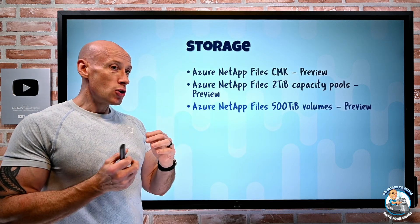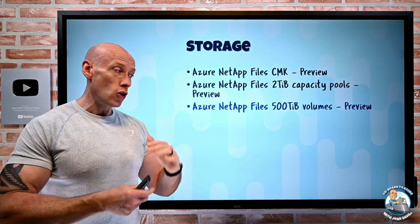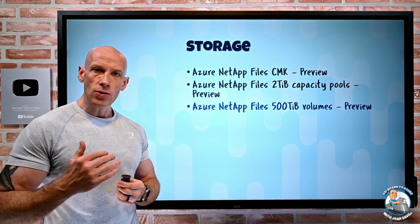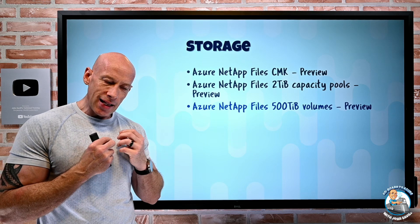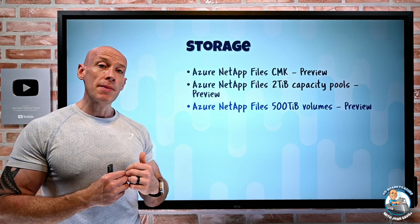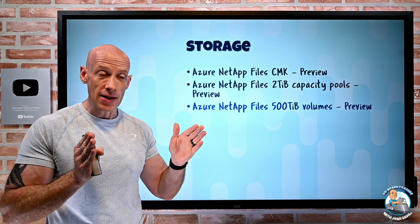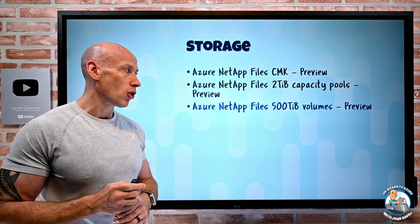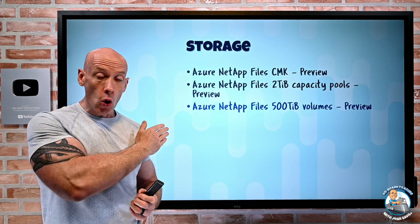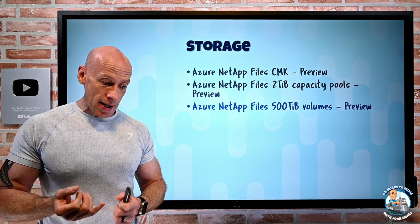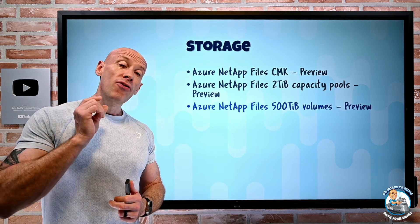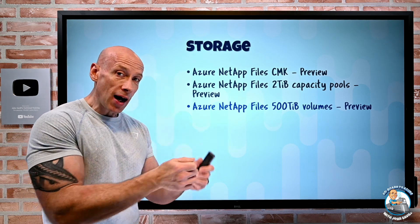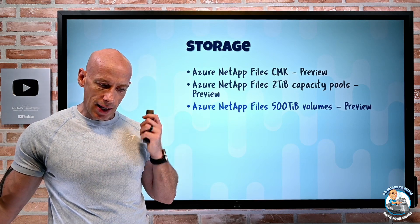At the other end of the scale, within those capacity pools I create volumes, and I can now have a large volume type. Previously, the maximum volume size was 100 terabytes. But now, if I select this new large volume type, it can be between 100 and 500 terabytes — not more than 500 and not less than 100. I can create it across all the different performance tiers: standard, premium, and ultra. However, the performance will be that of a 100-terabyte volume regardless of the actual size, so it's important to understand that.